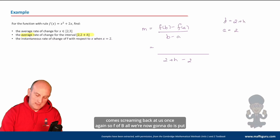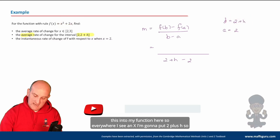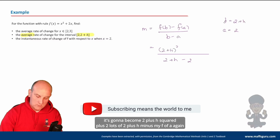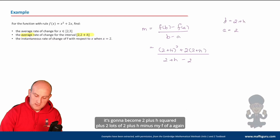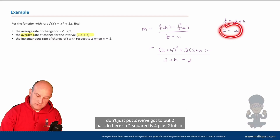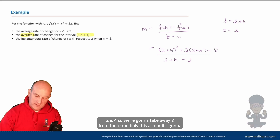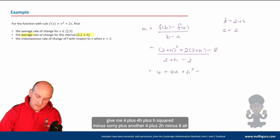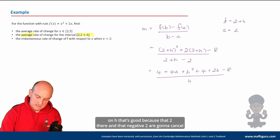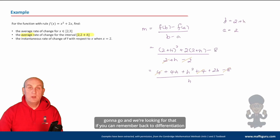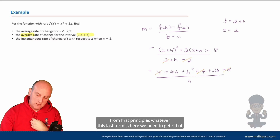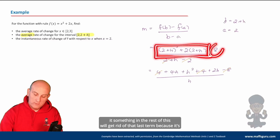So f(b): everywhere I see an x I put two plus h, so it becomes (two plus h) squared plus two lots of (two plus h). Then subtract f(a): two squared is four plus two times two is four, so we take away eight. Multiplying this all out gives four plus four h plus h squared plus four plus two h minus eight, all on h. The constants — that four, four, and negative eight — are going to cancel.